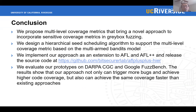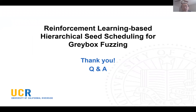In conclusion, we propose multi-level coverage metrics that bring a novel approach to incorporate sensitive coverage metrics in greybox fuzzing. We design a hierarchical scheduling algorithm to support the multi-level coverage metrics based on the multi-armed bandit model. We implement our approach as an extension to AFL and AFL++ and open-source the code. We evaluate our prototypes on DARPA CGC and Google FuzzBench benchmarks. The results show that our approach not only can trigger more bugs and achieve higher coverage, but also can achieve the same coverage faster than existing approaches. So this is all about our work. Thank you. Any questions or comments are welcome.